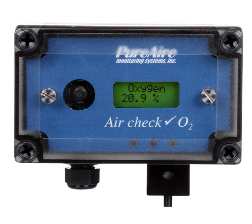Recent PTRMS instruments based on time-of-flight mass spectrometry have been reported to reach detection limits of 20 pptv after 100 ms and 750 ppqv after 1-minute measurement time. The mass resolution of these devices is between 7,000 and 10,500 m/delta m, thus it is possible to separate most common isobaric VOCs and quantify them independently.